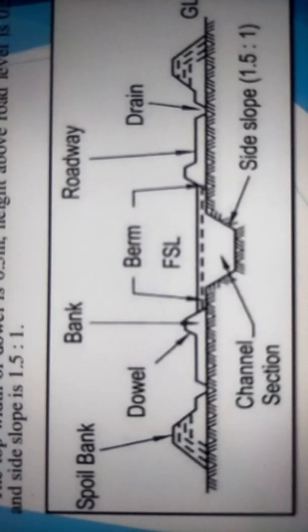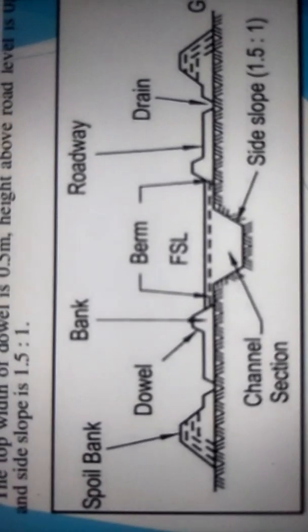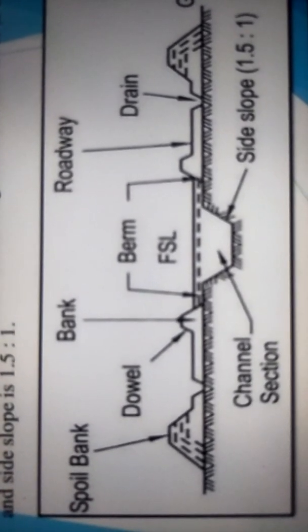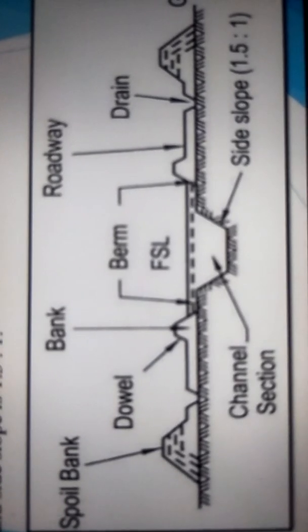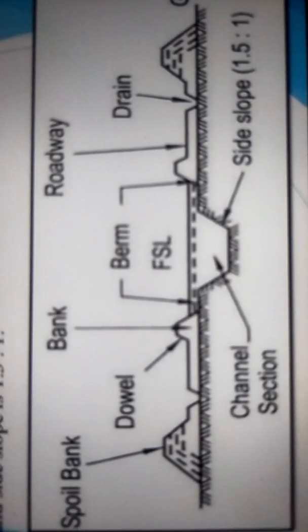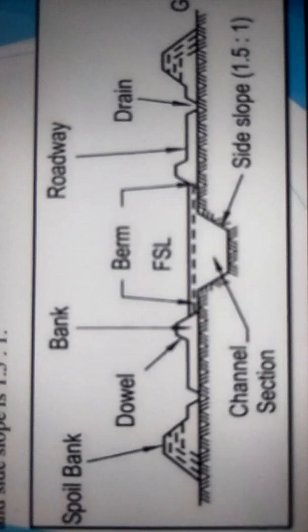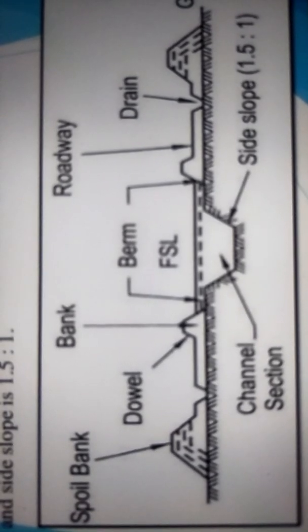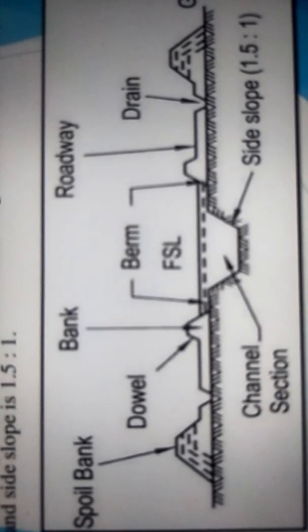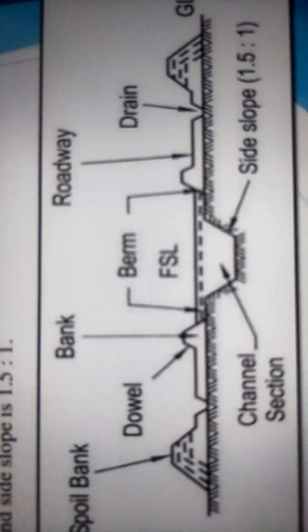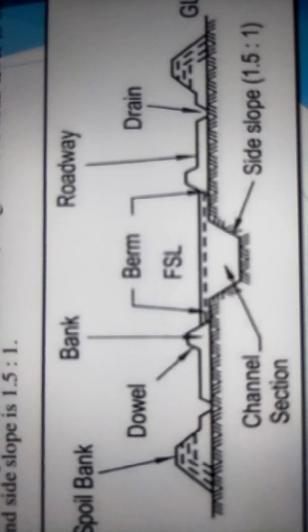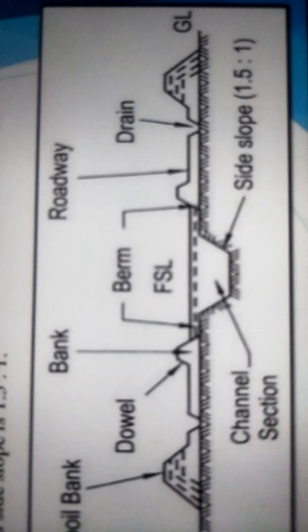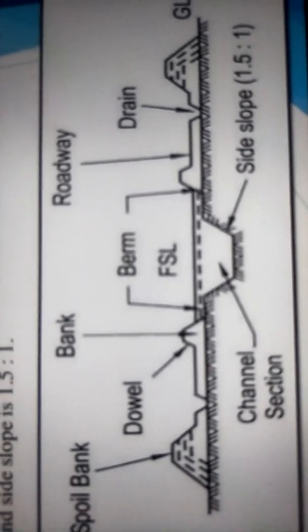As in the last lecture, we studied about the term berm. If you are able to see various terms in the cross-section of a canal: the first one is spoil bank, dowel, bank, berm, FSL, channel section, roadway, side slope, drain, and ground level — all those components are here.